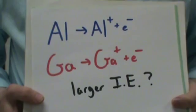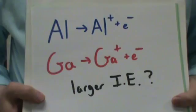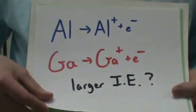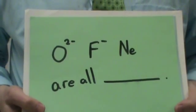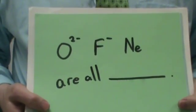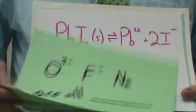What has the larger ionization energy? It would be the aluminum. These three things are what? Isoelectronic.